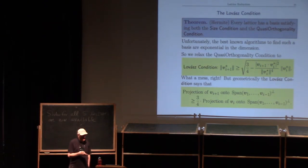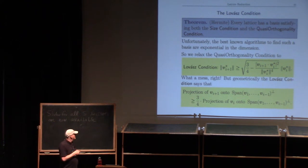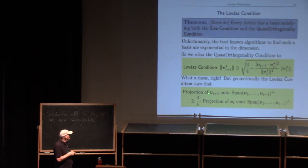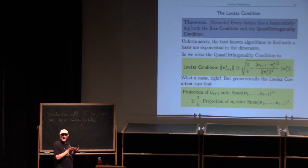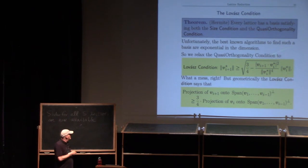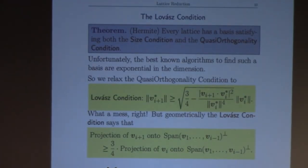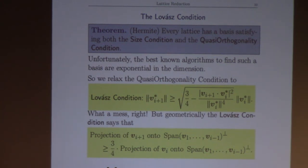Geometrically, this condition on the (i+1)th and ith Gram-Schmidt vectors says: take the first i−1 vectors, look at the hyperplane they span and its orthogonal complement, and project the (i+1)th vector onto that orthogonal complement — it's at least 3/4 (or √(3/4)) the length of the projection of v_i onto that orthogonal complement.